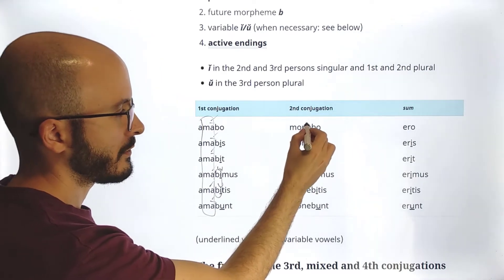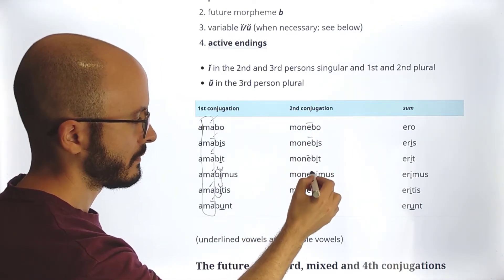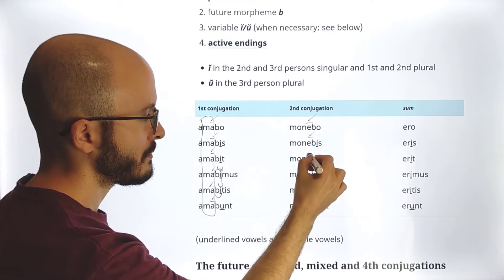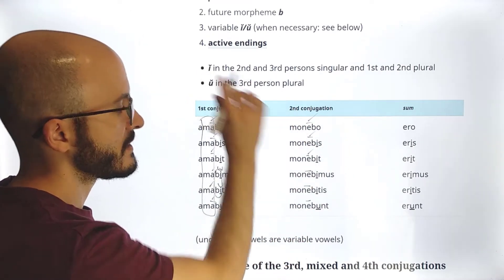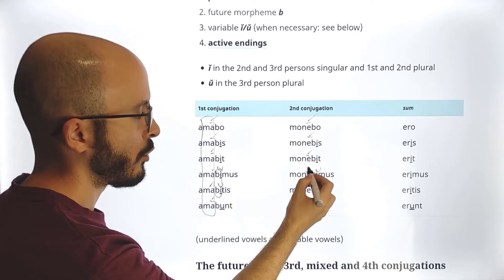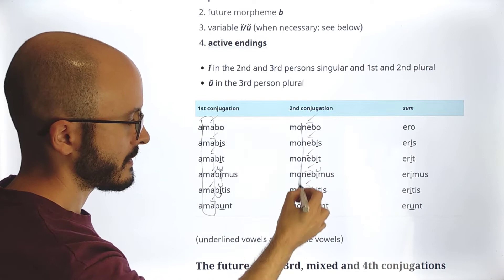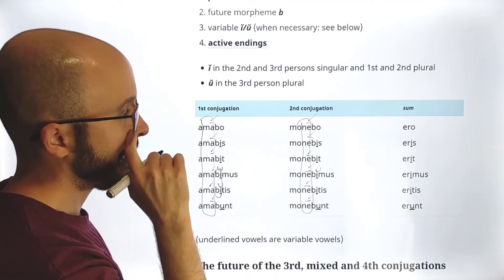Then in monebo, we also know that this E is always long. So it would be monebo, monebis, monebit. Now, this E again is this E. So monebimus, monebitis, monebunt. So again, the stress always the same syllable.